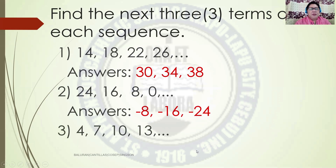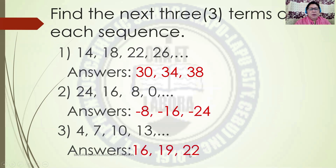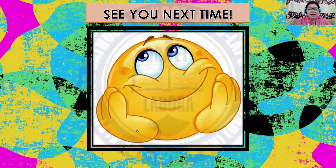Number 3: what are the next 3 terms of 4, 7, 10, and 13? The answers are 16, 19, and 22. The Common Difference is 3. So 13 plus 3 is 16, 16 plus 3 is 19, 19 plus 3 is 22. Do you have questions? If there is none, see you next time. Bye!